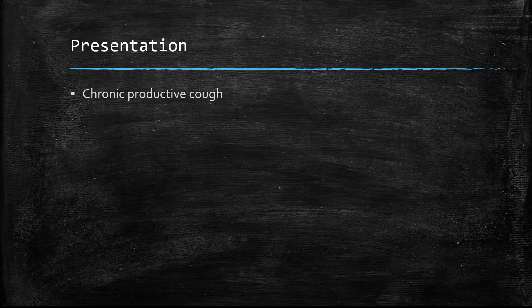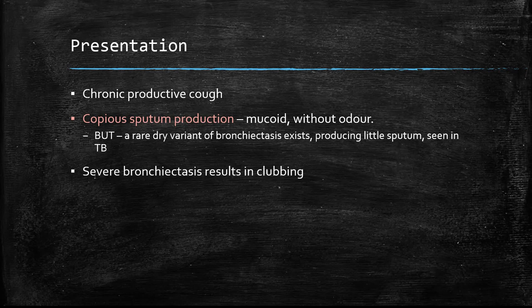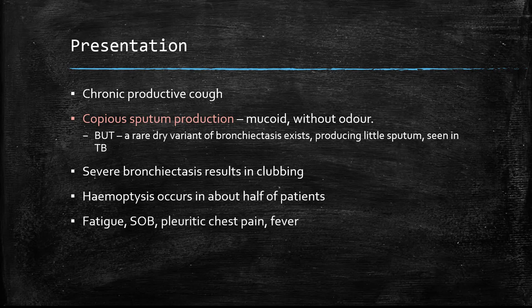How does bronchiectasis present? Patients often present with a chronic productive cough. A notable feature is copious sputum production. If you see a patient in a ward, in exams, and they have lots of sputum pots next to them, you know it's bronchiectasis because of the vast quantities of sputum produced. In the rare instance, there's also a dry variant that occurs in TB, which produces very little sputum. Severe bronchiectasis in the long term can result in clubbing, and haemoptysis occurs in about half of patients.